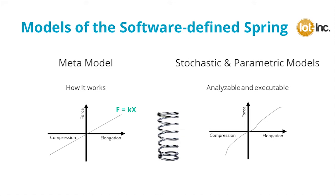Whereas the high-level metamodel was a linear equation, our stochastic model will be a nonlinear equation, the degree of which depends on the accuracy we need. These stochastic models are statistical models used by analytics, whereas parametric models are designed to be executed quickly and are used by the application. A nice way to think about this: stochastic models are used to look into the past and into the future with analytics, whereas parametric models are used to look at the present with the application.